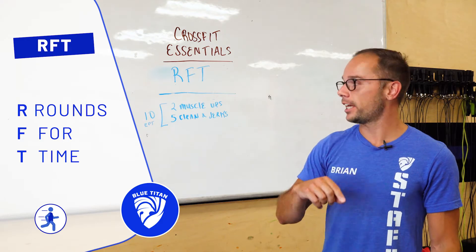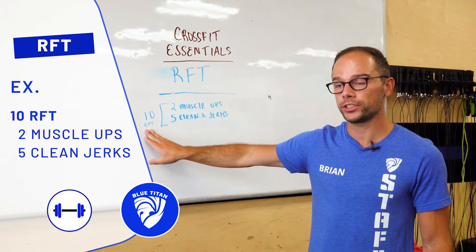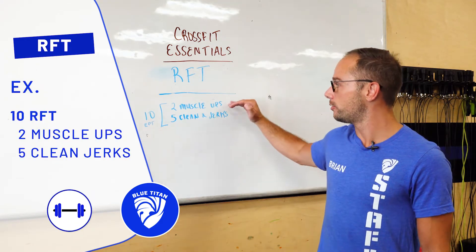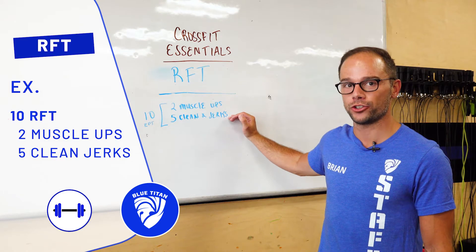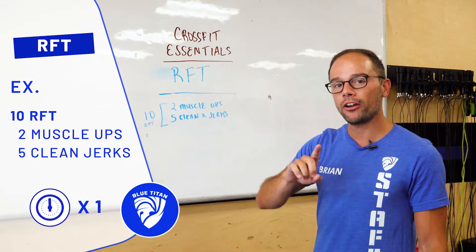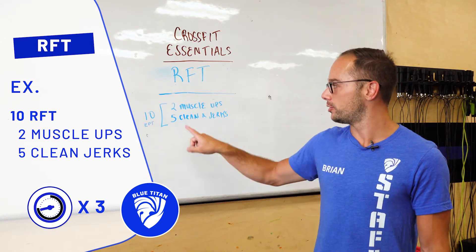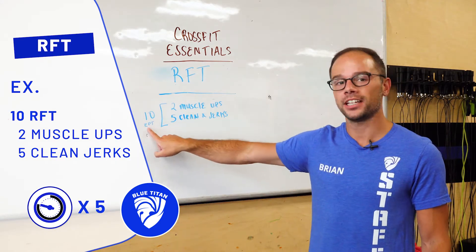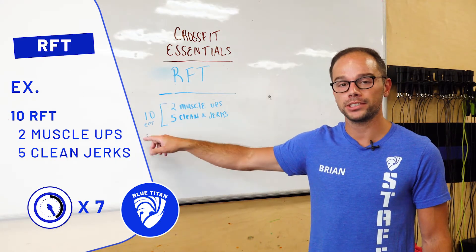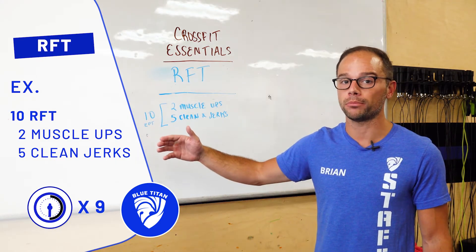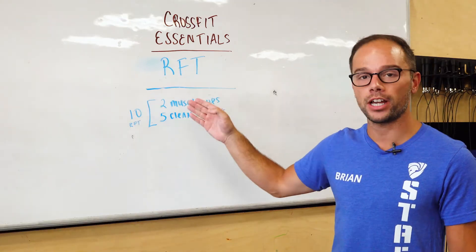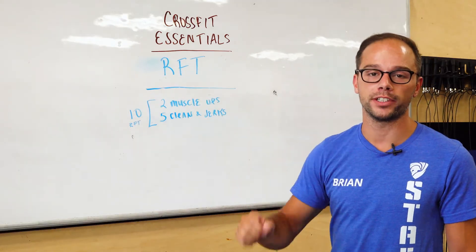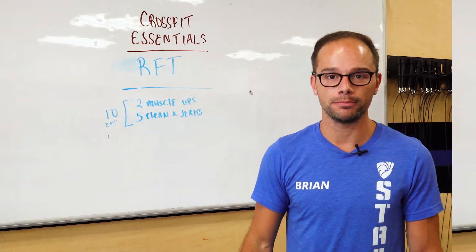An example of this would be 10 rounds for time of two muscle ups and five clean and jerks. However long it takes you to complete this 10 times is your score. That has been rounds for time in CrossFit Essential Terminology.